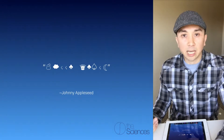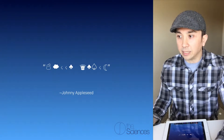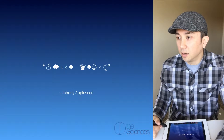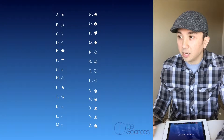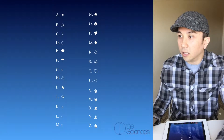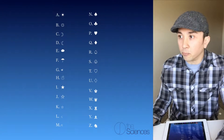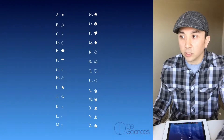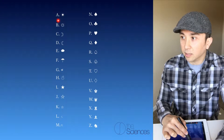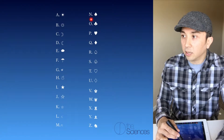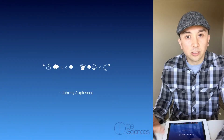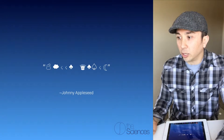So let's say Johnny Appleseed gave you these symbols. On its own, you wouldn't know what they meant unless he also gave you a decipher — a list of what these symbols represent. For example, the sun would represent the letter A, and the spades would represent the letter N. So then you can go through and start to decipher what Johnny is saying.